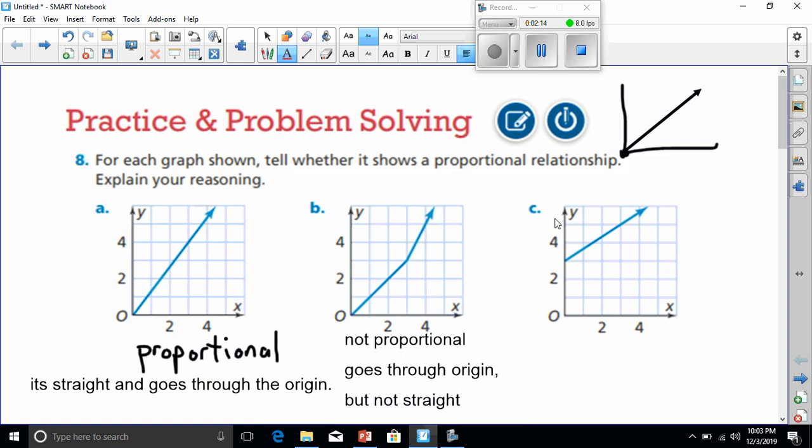All right, and let's go to C. This one is straight, but it doesn't go through the origin, so again, it is not proportional. Not proportional.